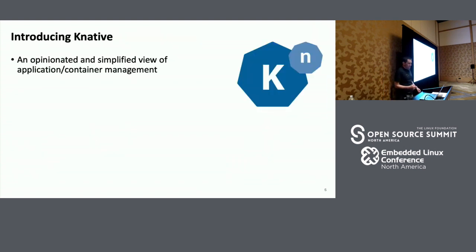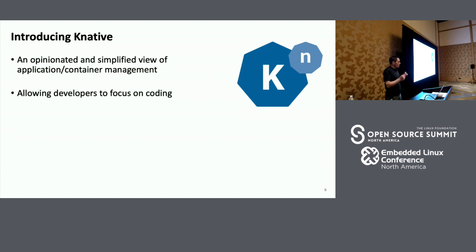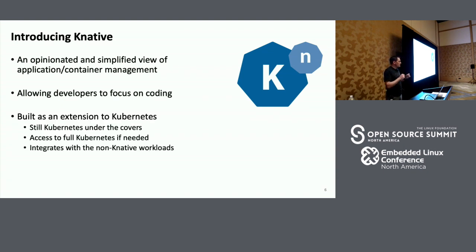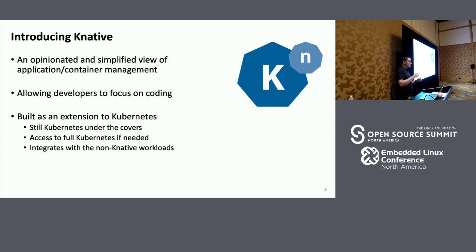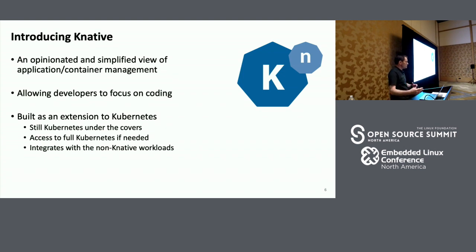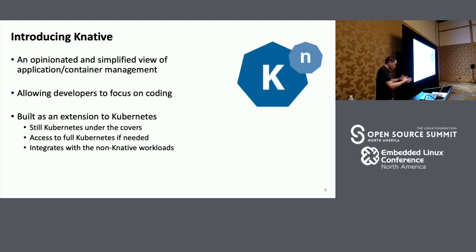Knative is an opinionated and simplified view of application container management. What that really means is it allows you as a developer to go back to focusing on writing code, but still allows you to leverage Kubernetes under the covers. So you still have Kubernetes there with all the features — it's just going to expose it in a more user-friendly fashion. Because Kubernetes is still there, if you want access to Kubernetes features, they're still available. The hope is that 80 to 90% of use cases are covered by Knative natively, and you only need to go around it for that extra 10% to get to more advanced features.